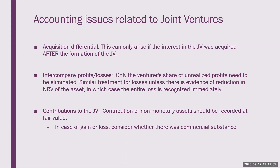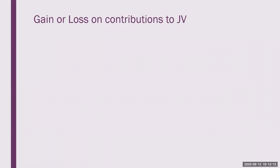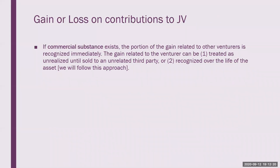If the contribution contains commercial substance, then the portion of the gain related to other venturers is recognized immediately. The gain that relates to the venturer's own ownership can be either treated as unrealized until the asset transferred is sold to an unrelated third party, or recognized over the remaining useful life of the asset transferred. For this course, we will follow the latter approach of recognizing any gain attributable to the venturer over the life of the asset.